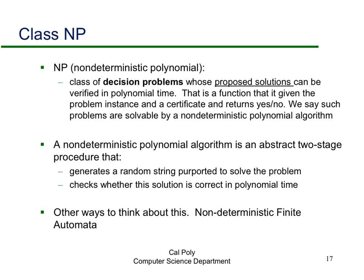One way to think about NP is that a non-deterministic polynomial time algorithm is an abstract two-stage procedure: it generates a random string purported to solve the problem, and then checks it in polynomial time. Other perspectives are covered in a formal language course, typically involving non-deterministic finite automata.